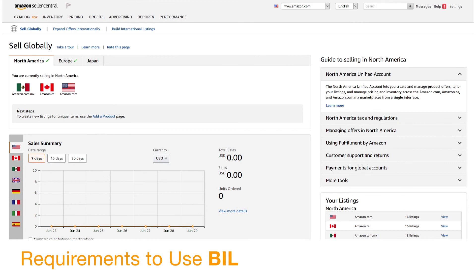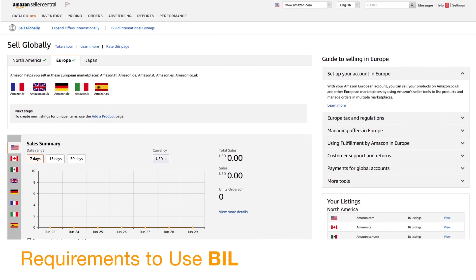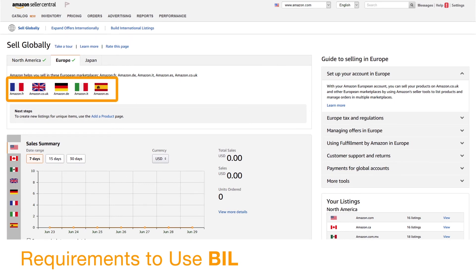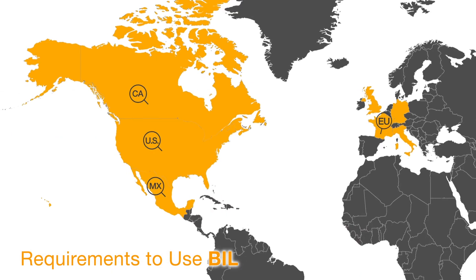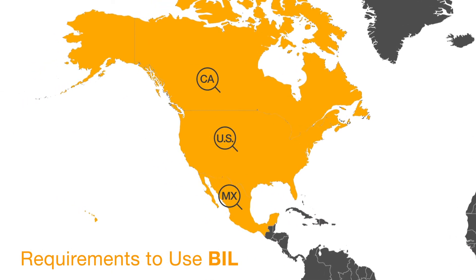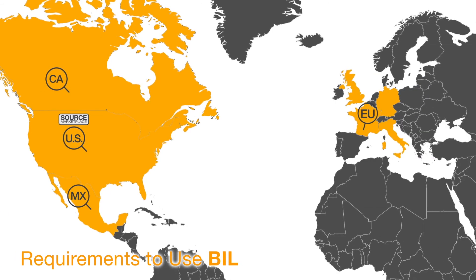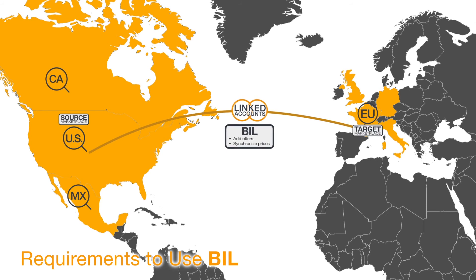Sellers with a unified account can use BIL to add and manage offers in the same region. Sellers with linked accounts can use BIL to add offers and synchronize prices across regions. For example, if you are currently selling in the U.S. marketplace and want to make your products available for sale in Mexico, with a unified account, you can use BIL to select the U.S. as your source marketplace and add offers to your target marketplace, Mexico. With linked accounts, you can select the U.S. as your source marketplace and add your offers to any of the five European target marketplaces by using BIL.